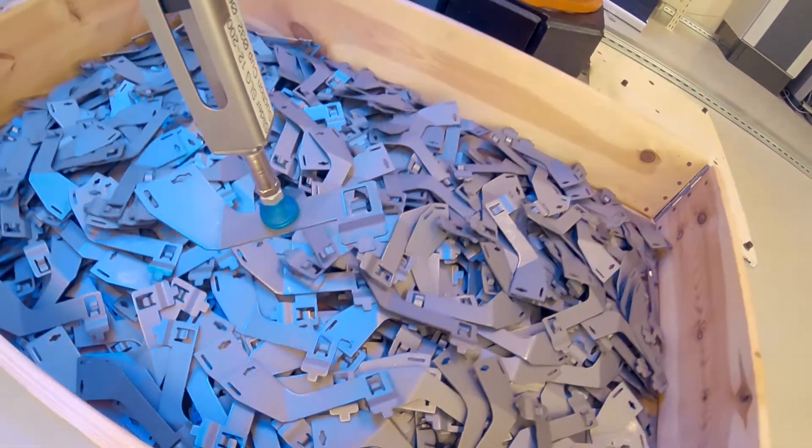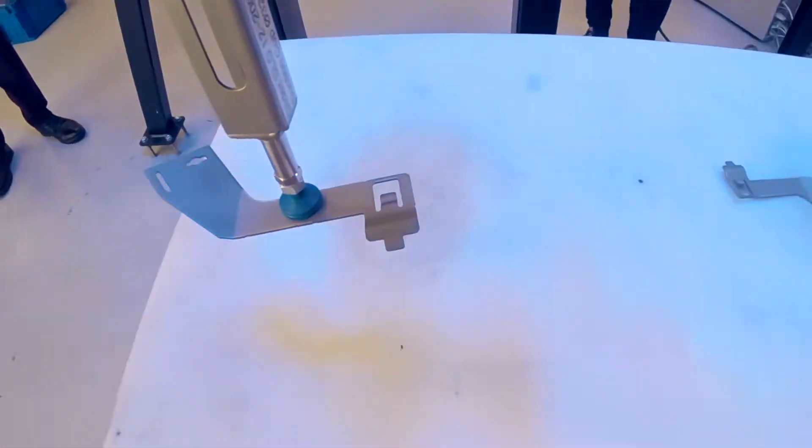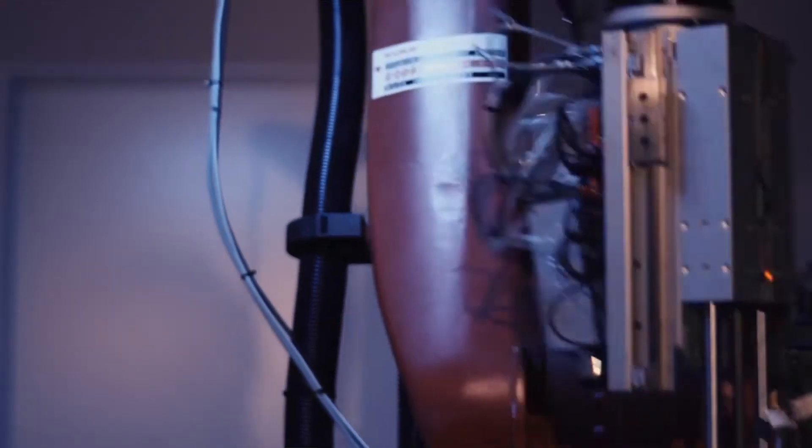We can define robotic random bin picking as the ability of vision guided robot arms to locate and pick individual parts from a jumble of parts randomly oriented inside the bin or a container.